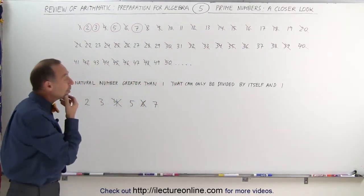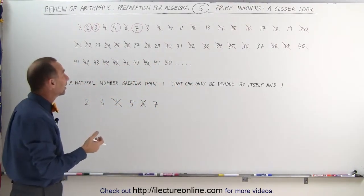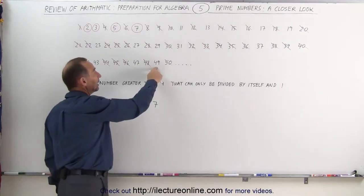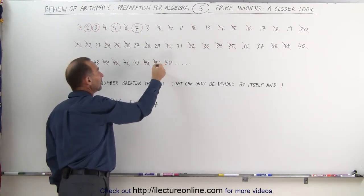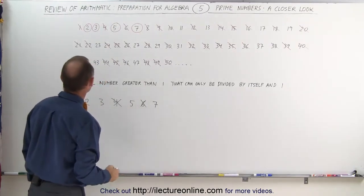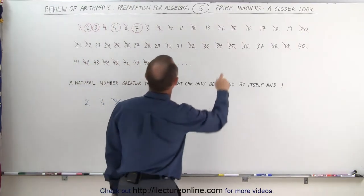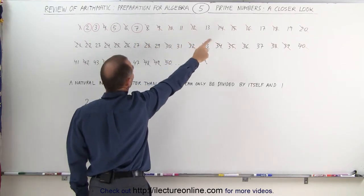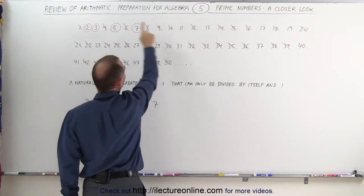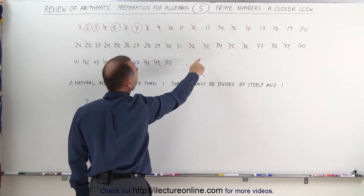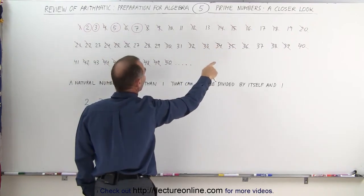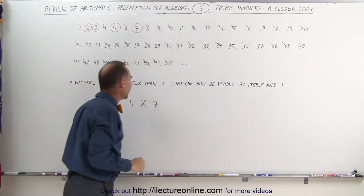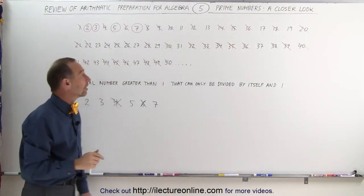How about the number 7? Any numbers left that can be divided by 7? I know that 49 is 7 times 7, so that can be divided by 7. 1×7 is 7, 2×7 is 14, 3×7 is 21, 4×7 is 28, 5×7 is 35, 6×7 is 42, 7×7 is 49. Now, there are still a lot of numbers left.